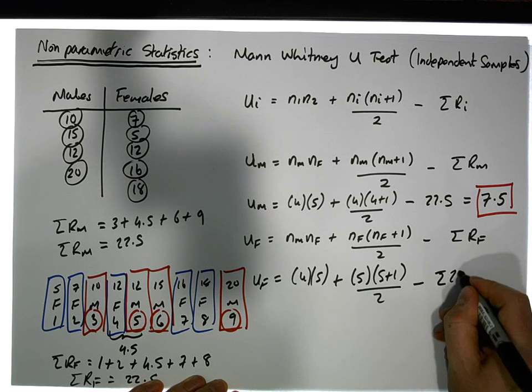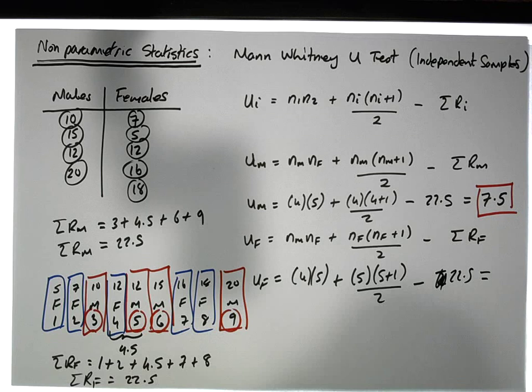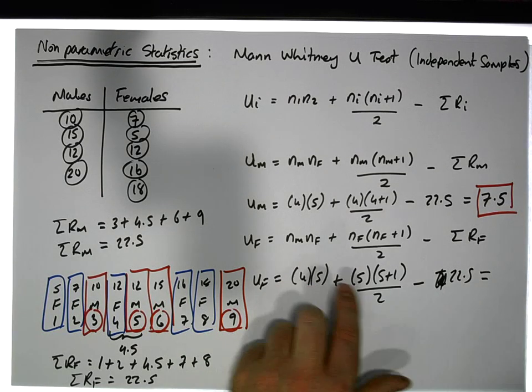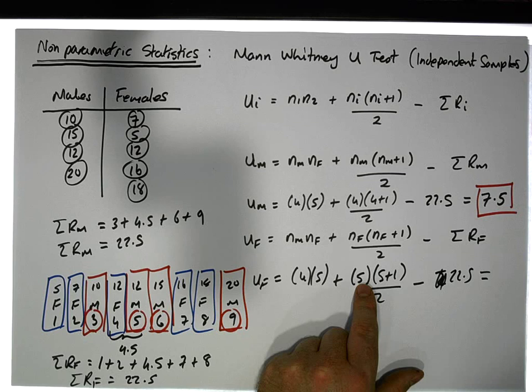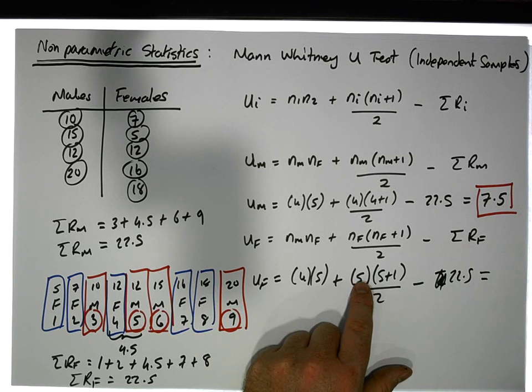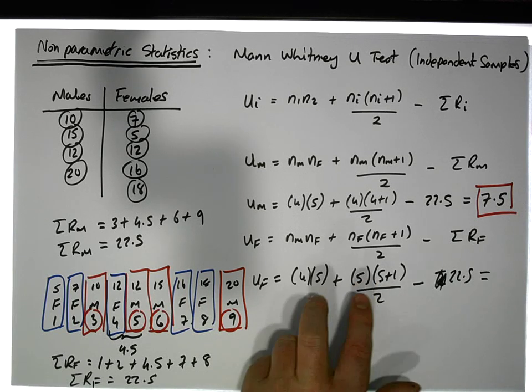Which gives us a value of 4 times 5 is 20, 5 times 6 is 30, divided by 2 gives us 15, so that gives us 20 plus 15, which is 35.